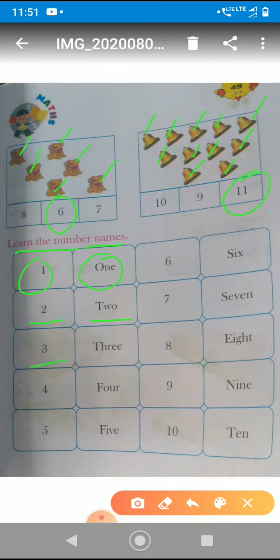Okay, three. T-H-R-E-E. That is three. Okay, the next number is four. F-O-U-R. Four.